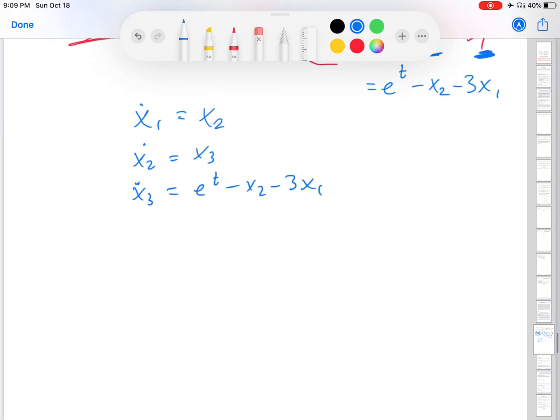All right, so one additional thing I'm going to do here is I'm going to write this as a matrix system. So how am I going to do that? So x1 dot, x2 dot, and x3 dot, I'm going to make that into its own vector. And then equals my unknowns here are x1, x2, and x3. And I do have a term which does not involve any x's in the equations, right? So that is going to be an extra term over here.